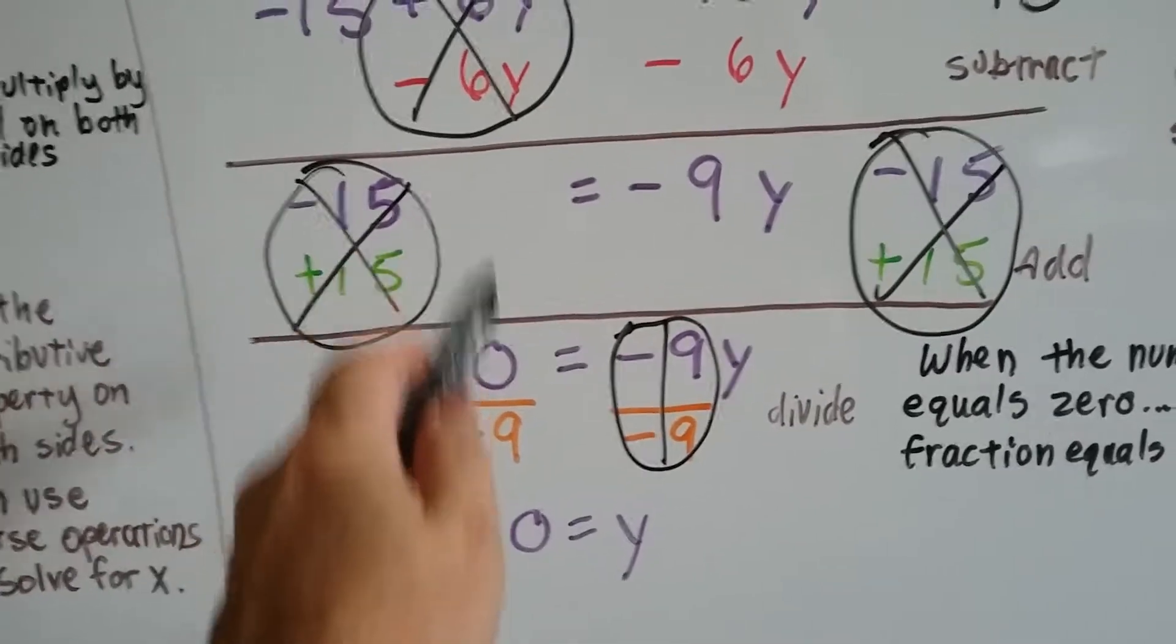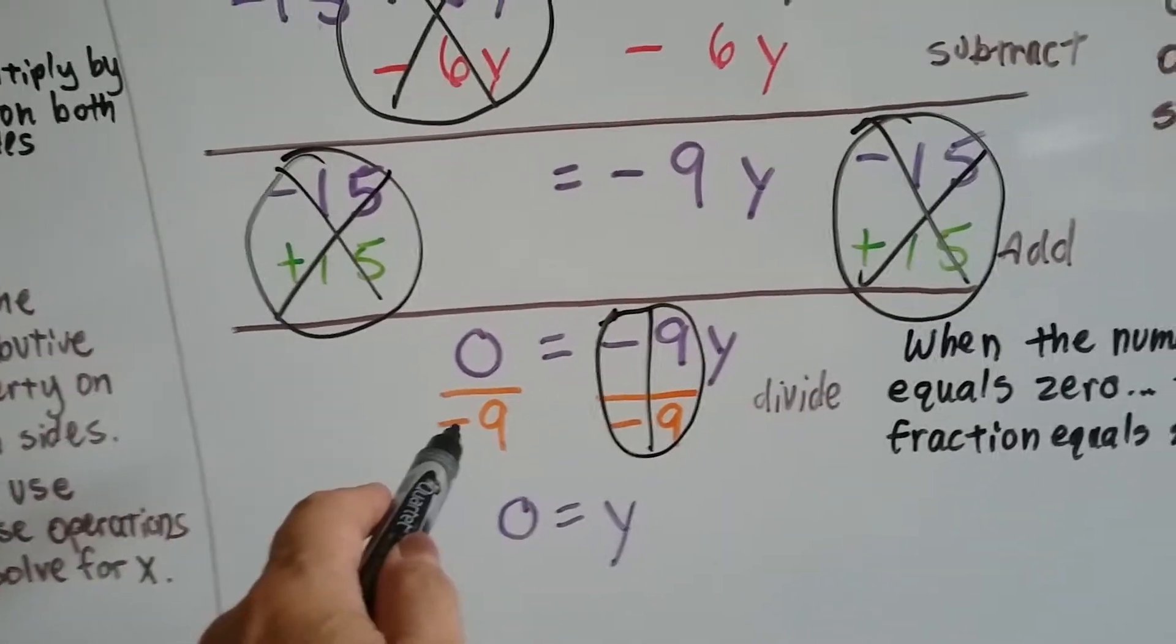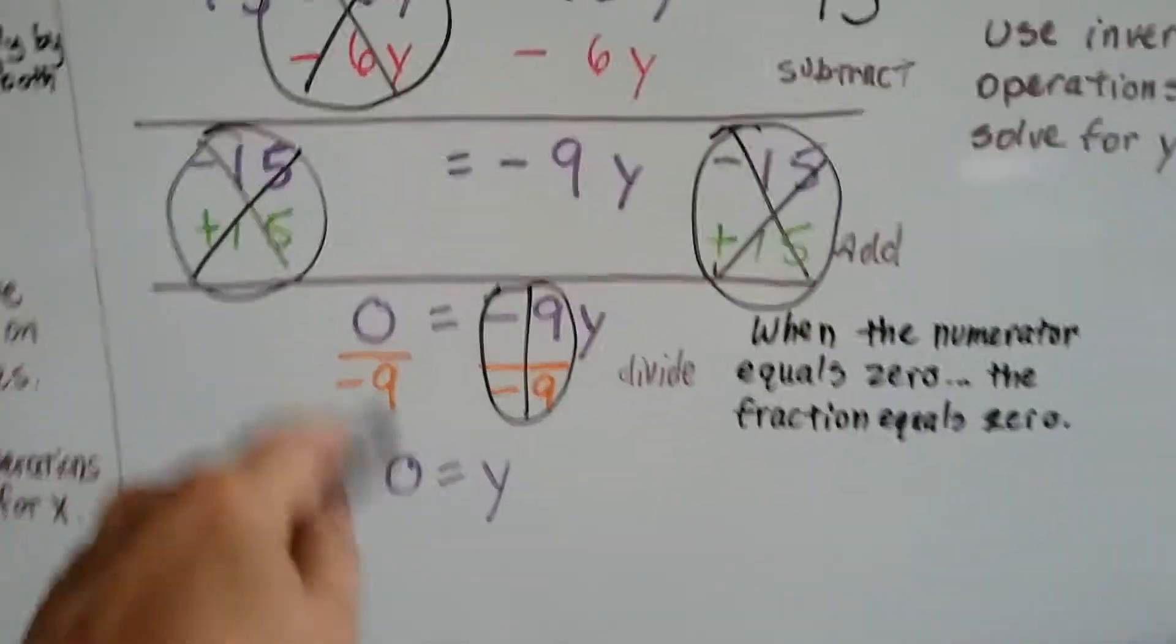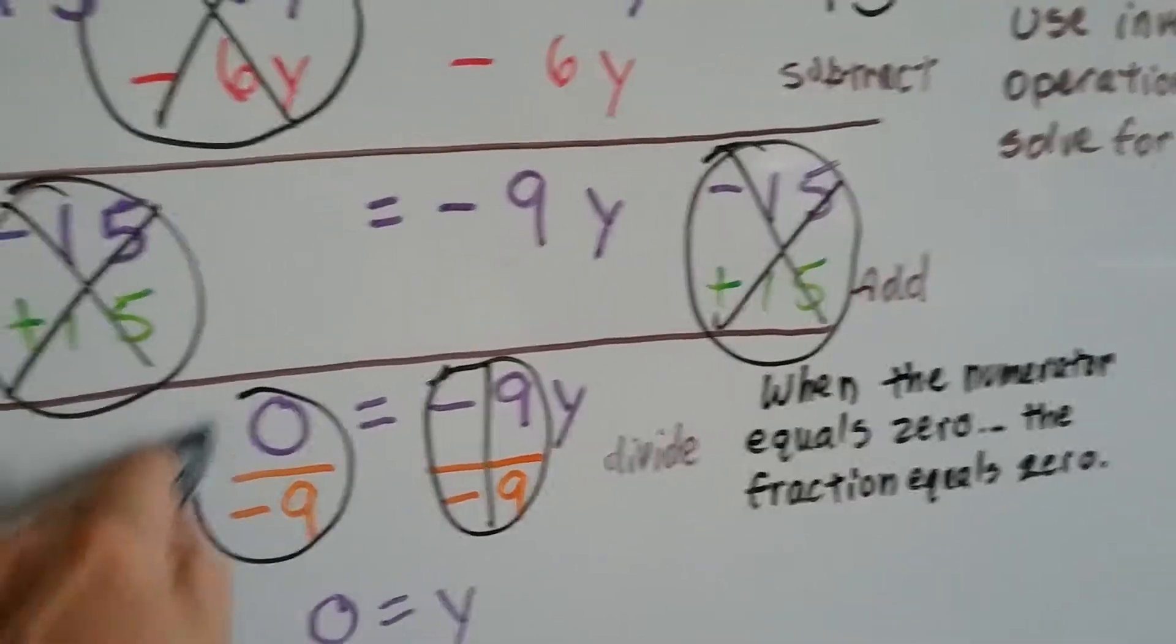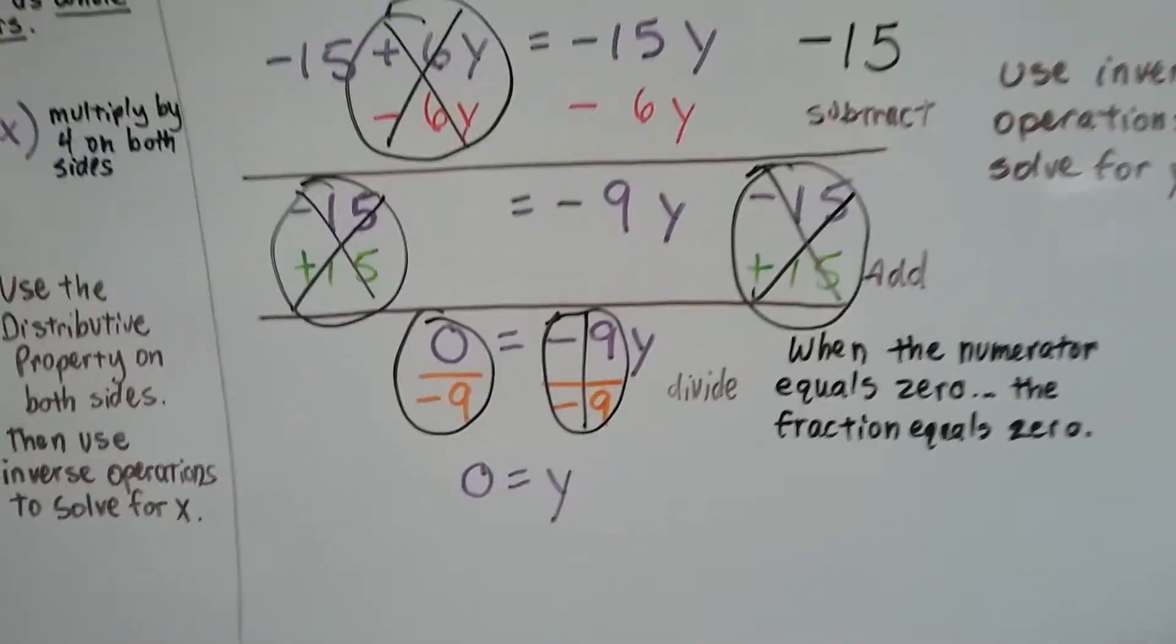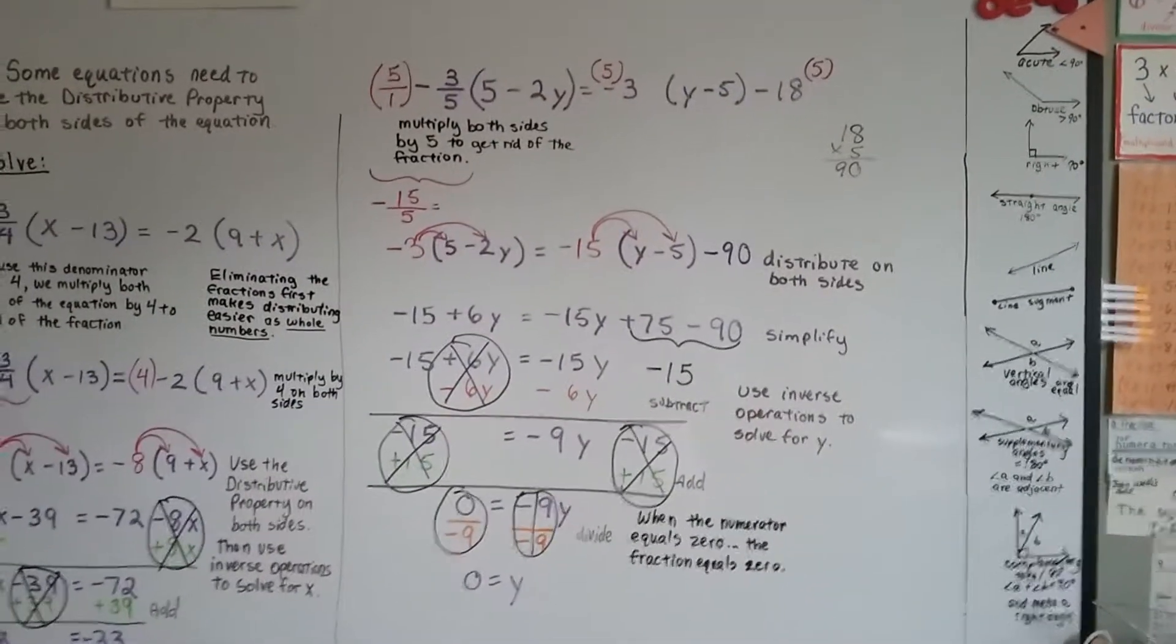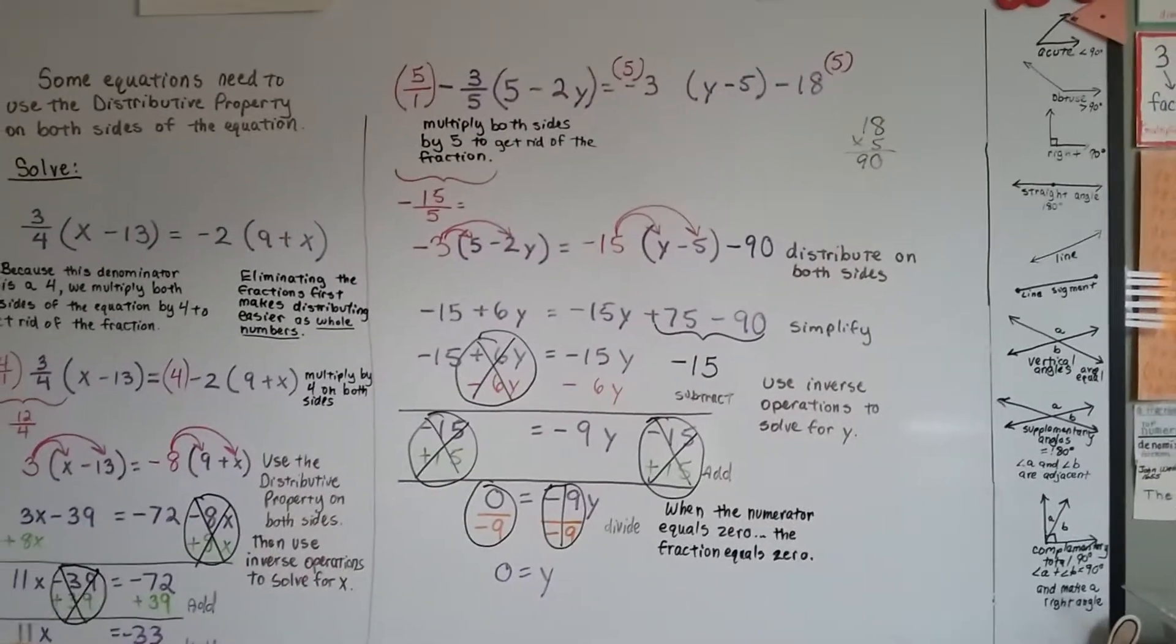But we have zero on this side. We have nothing. And when we divide that by negative 9, when the numerator equals zero, the fraction equals zero. So that's just a big old zero. Y is equal to zero. After doing all of this, we found out that y is equal to zero. Isn't that amazing?